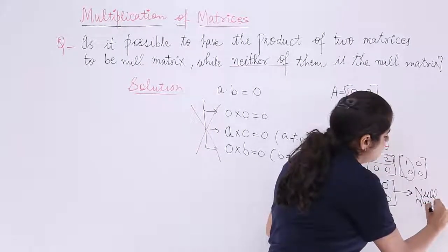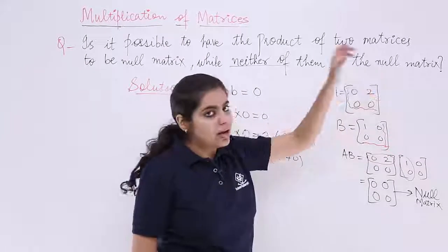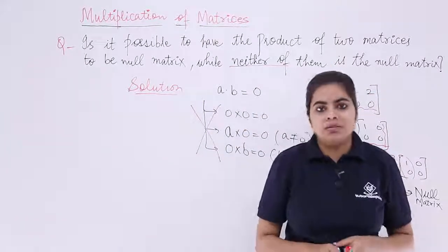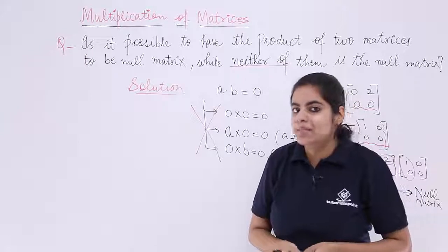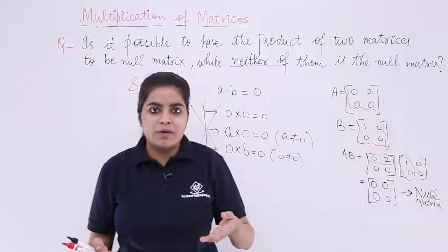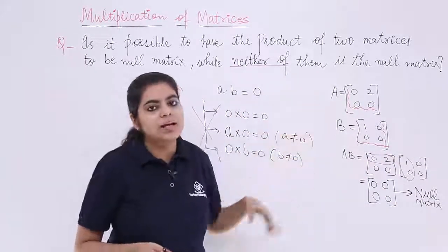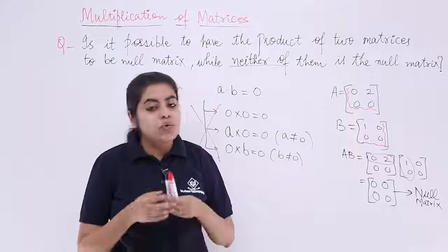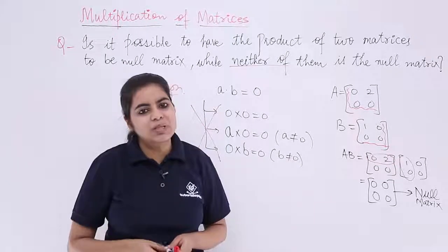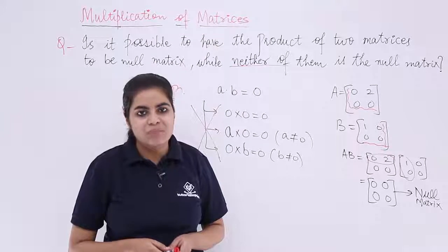What kind of a matrix did we need? We needed a null matrix wherein both the matrices should not have been 0 together or neither of them should have been 0. Yes, these weren't 0 matrices. So in this video we saw a numerical problem which was a concept-based problem on multiplication of matrices.